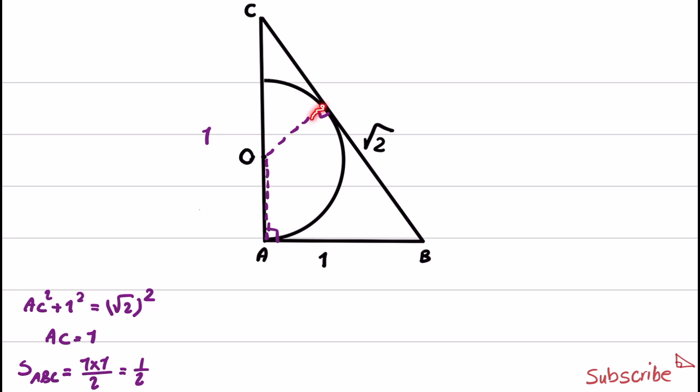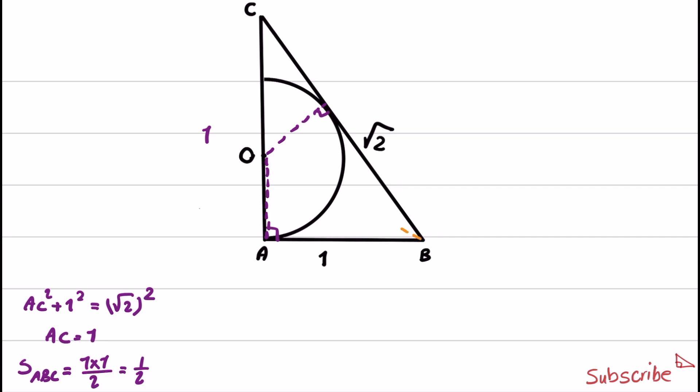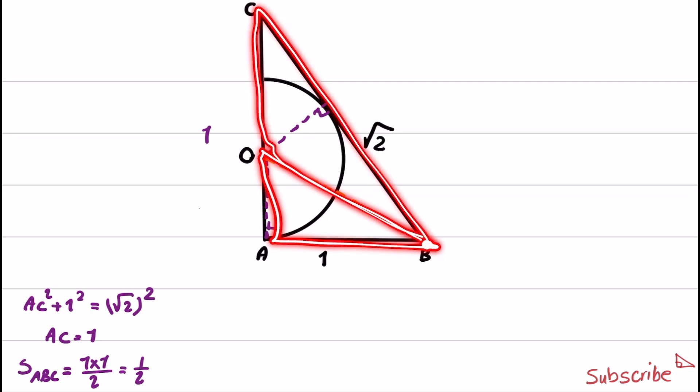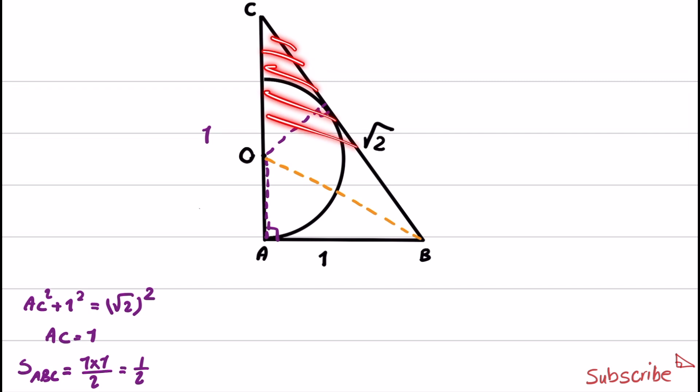Next step is to find the length of this radius that we plotted. In order to obtain that, I'm going to add another line segment to this problem, and that line segment will connect O to B. And now we have two triangles inside ABC. The area of triangle ABC is equal to area of AOB plus area of OBC.